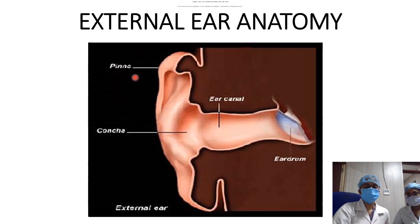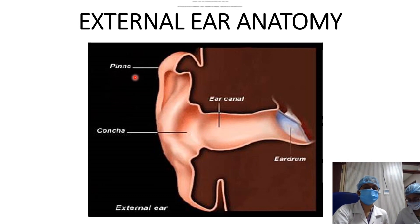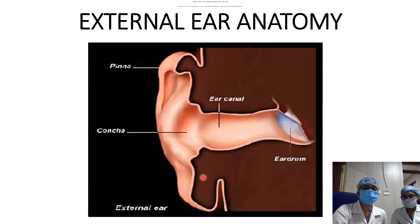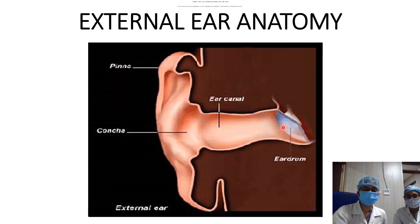Hello. Today we will be studying the anatomy of the external ear. The external ear consists of three main portions: the pinna, the external auditory canal, and the eardrum or tympanic membrane.